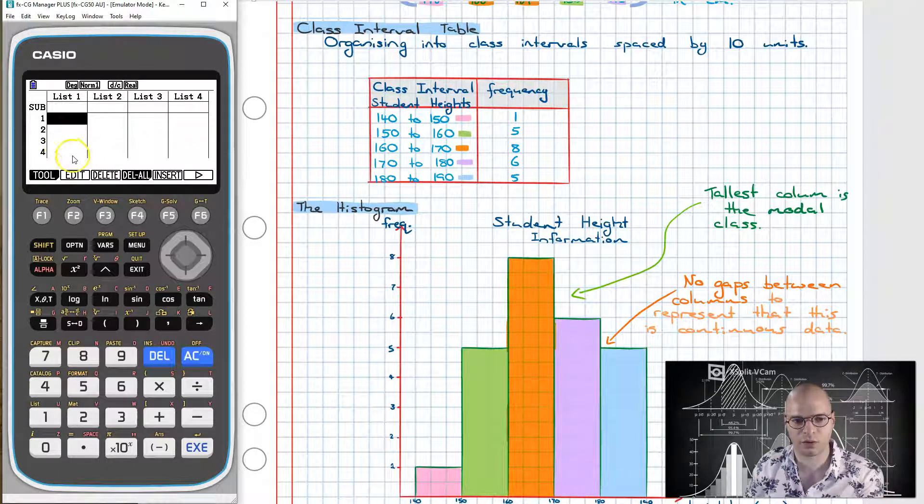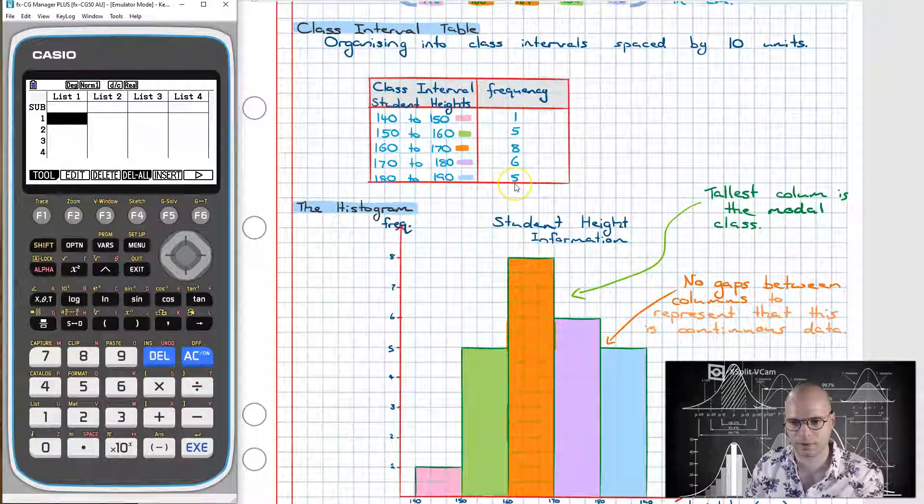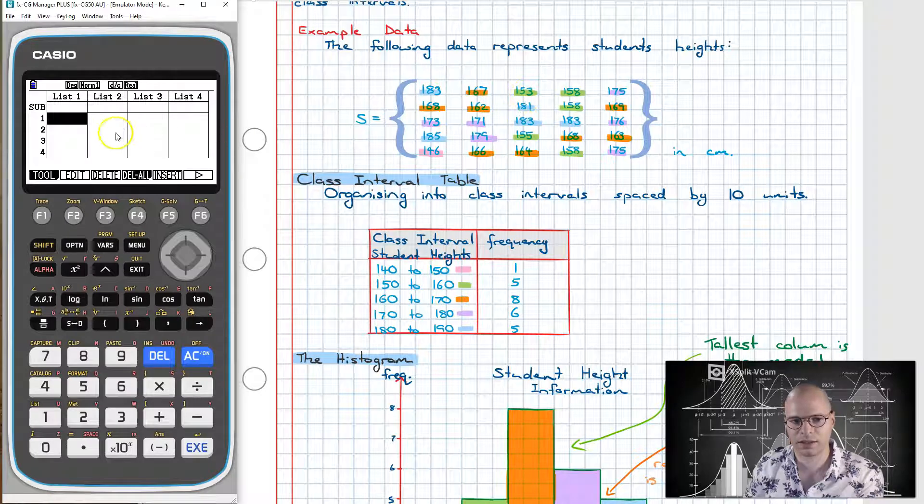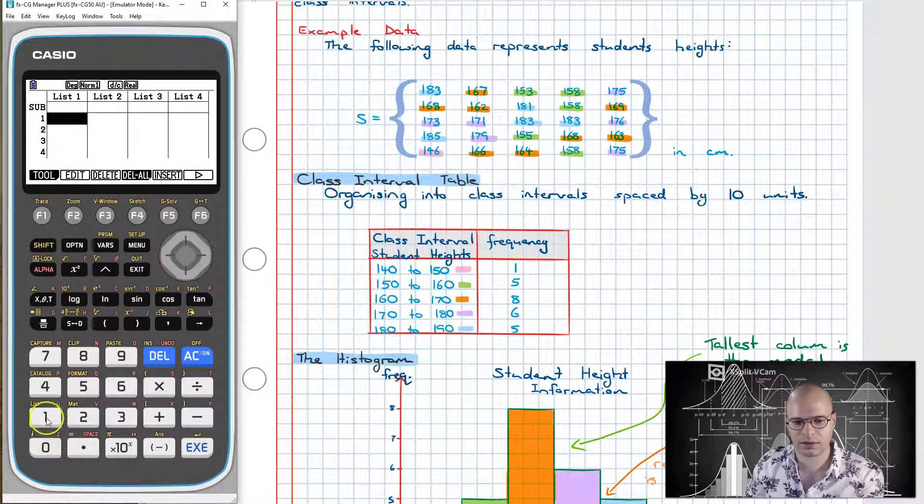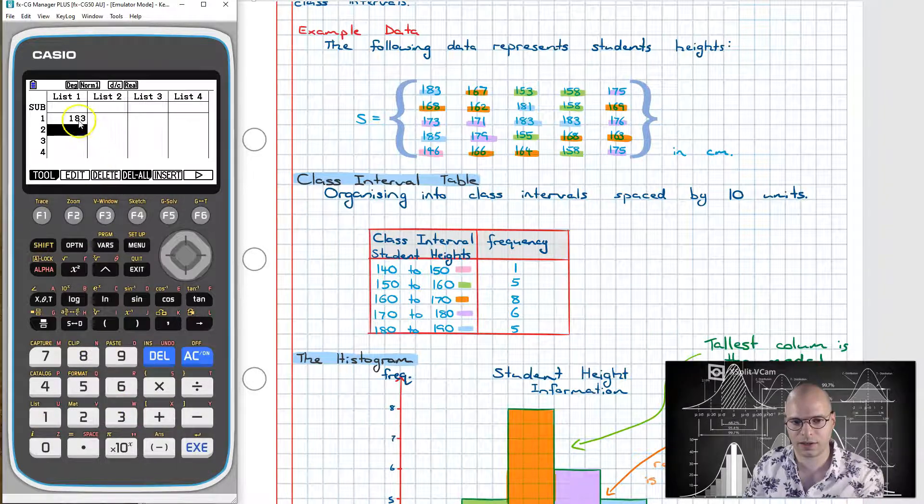I don't want to be working with a calculator that's already got stuff in it otherwise I might make an error. Now going up I need to import this data shown over here into list 1. To do this I'm going to simply just key it all in. Every time I put in a new data point I press execute and there it is.